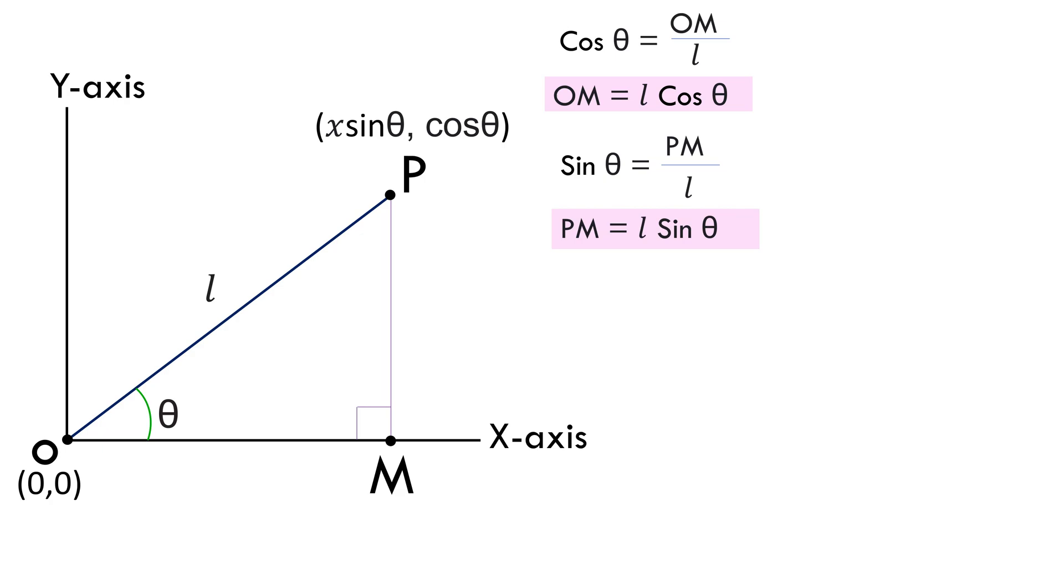Now, the coordinates of point P has been given to be x sin theta cos theta. This means this point is x sin theta units far away from the origin in the horizontal direction or x-axis. It means OM is equal to x sin theta.